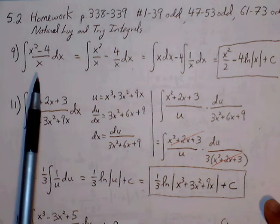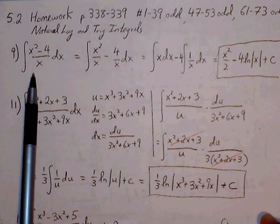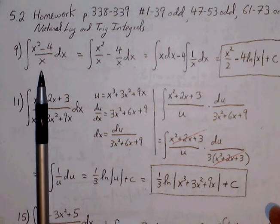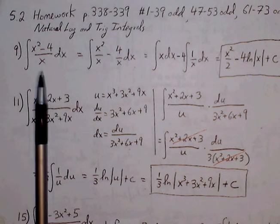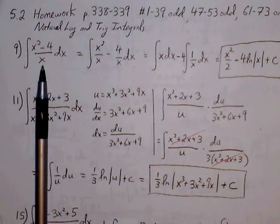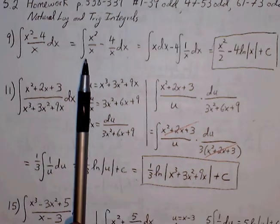Number 9. Anytime you want to figure out the rule for indefinite or definite integrals, first look to see if we can simply rely on power rule to get to our solution. In this case, there's only one term in the denominator, so we can split this up into individual terms: x squared over x minus 4 over x.